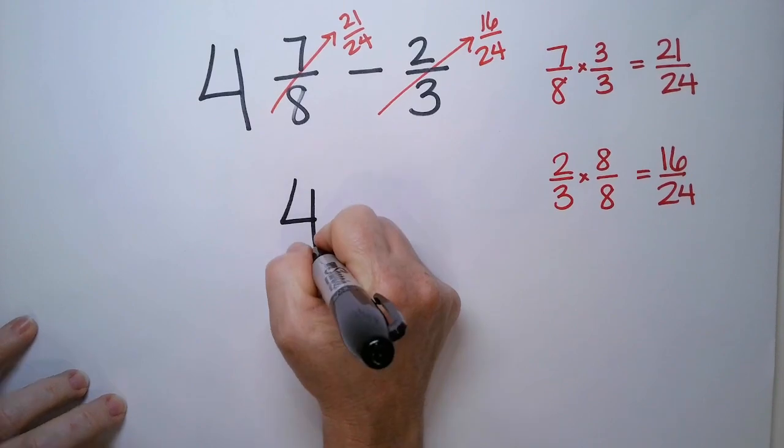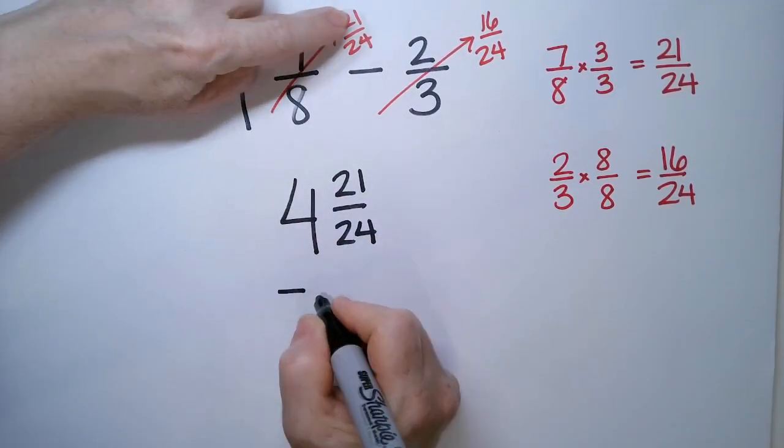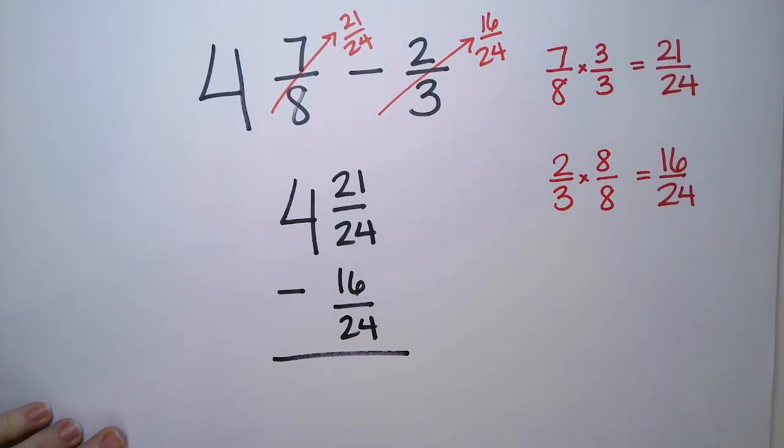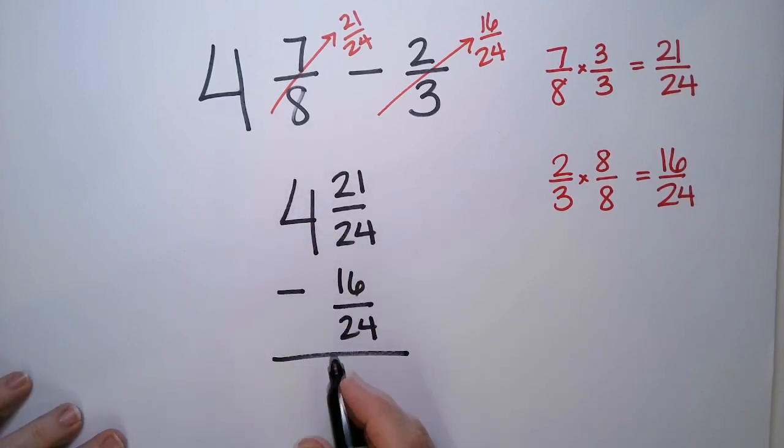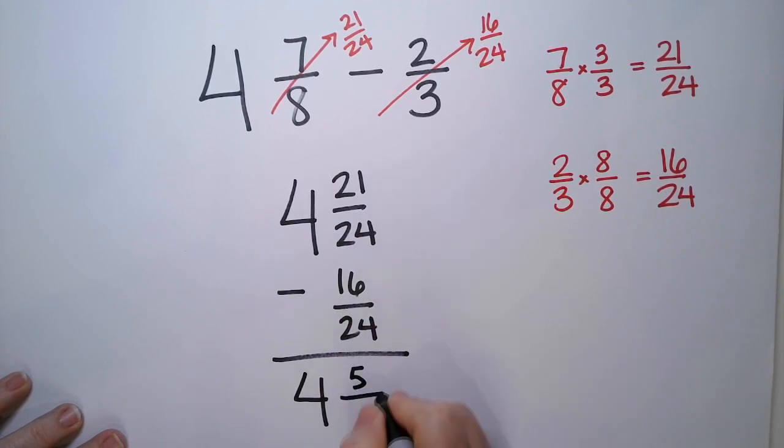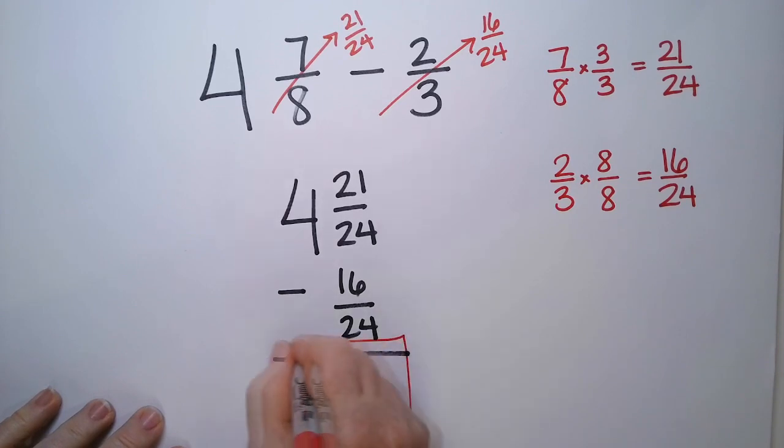Now we're going to do four. Let me rewrite the problem. 21 over 24 minus 16 over 24. Can we do the problem now? Absolutely. So this is a four, and then 21 minus 16 is five over 24. And that is my final answer.